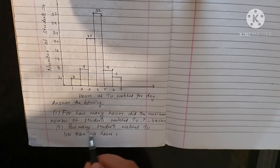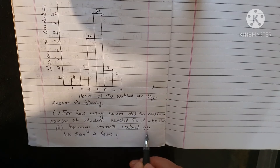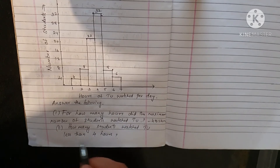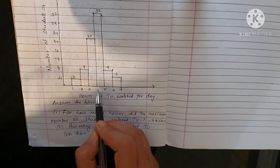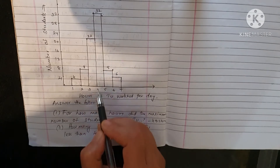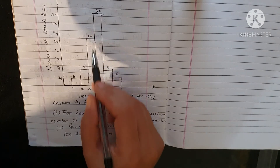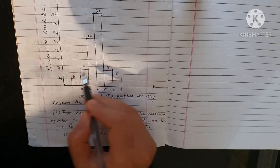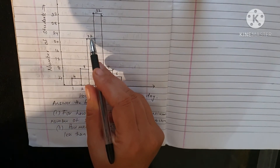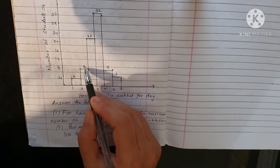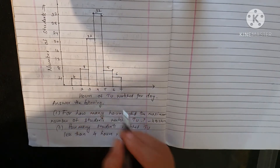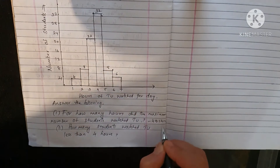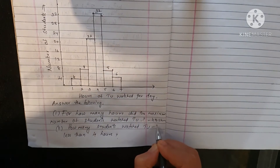Looking at the graph, the number of students who watched TV for those hours: 8 and 4. So 22 plus 8 equals 30, plus 4 equals 34. That will be the answer.